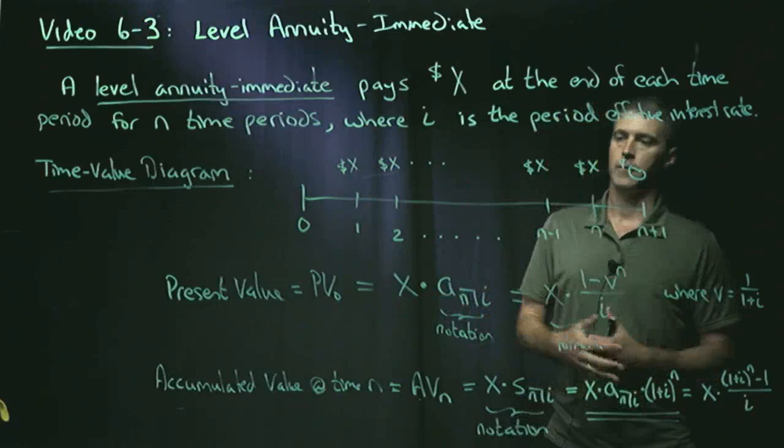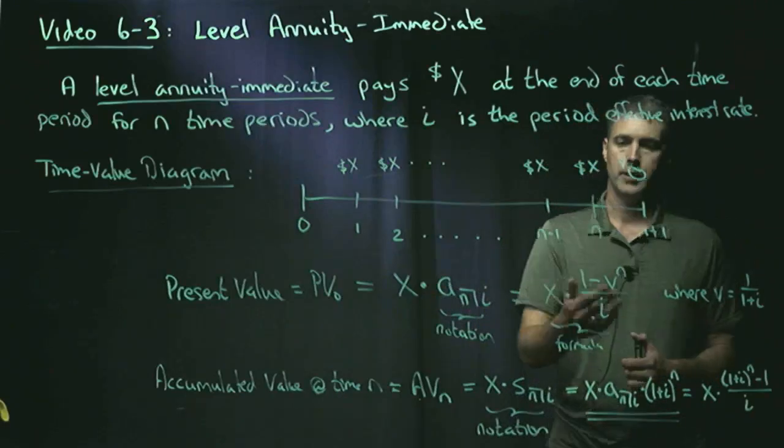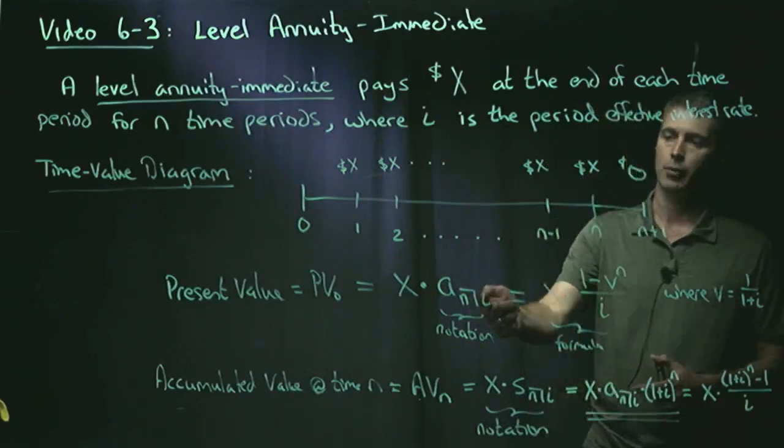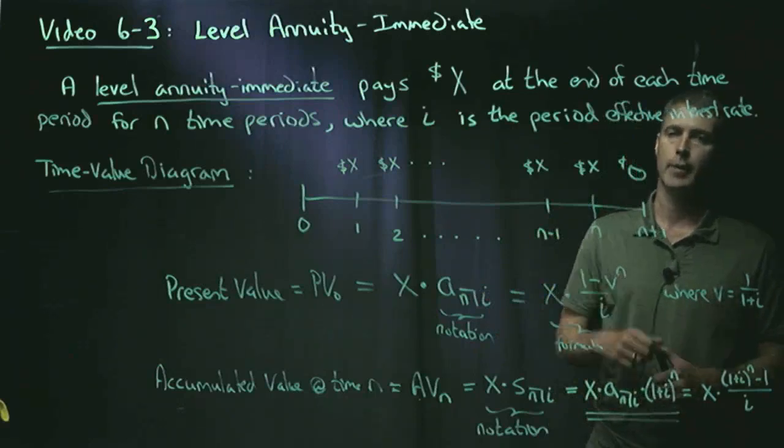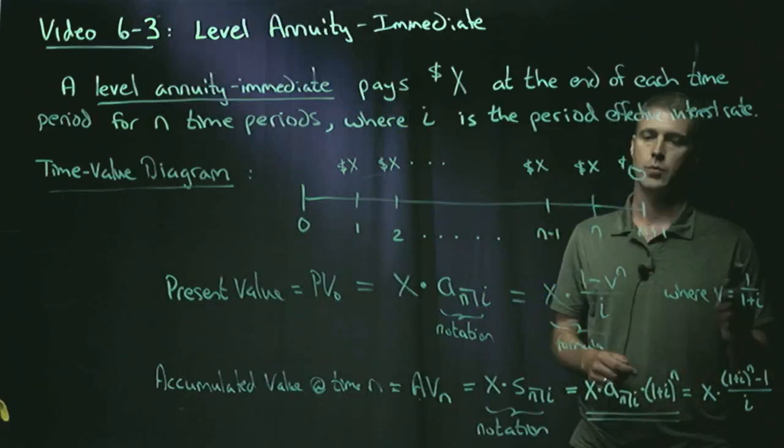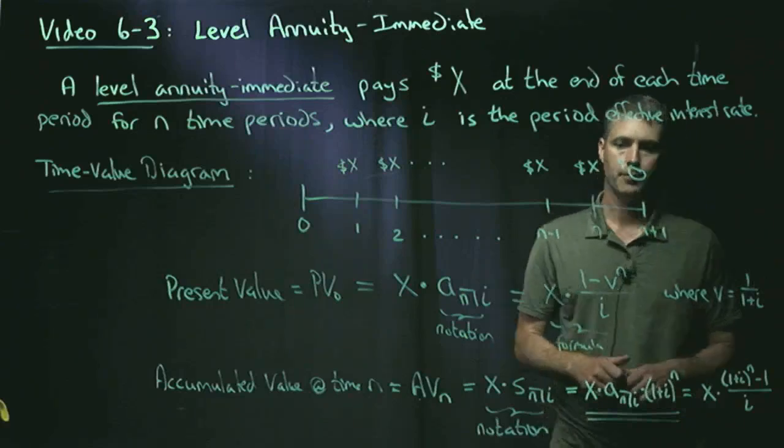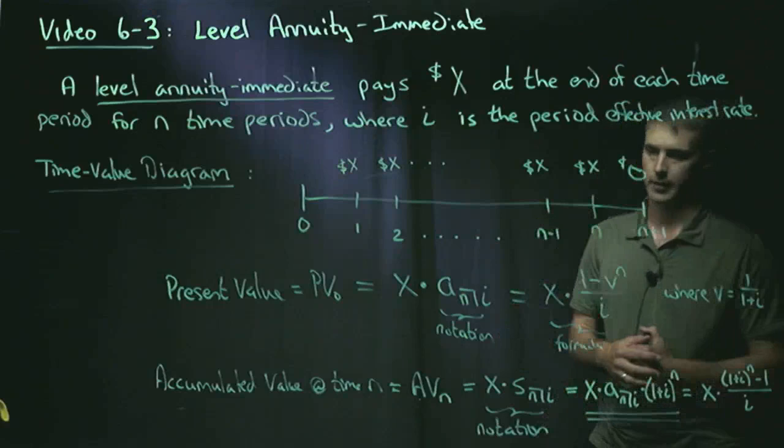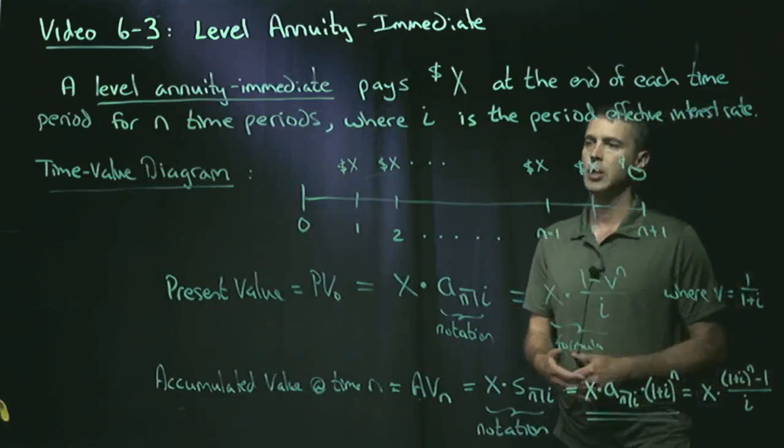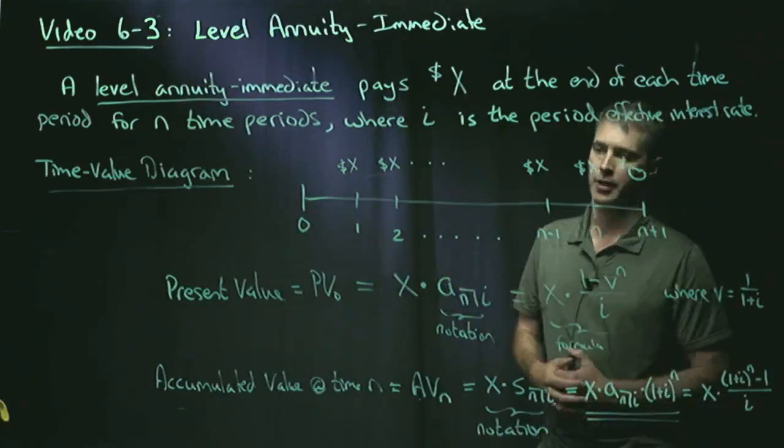The actual formula for calculating the present value is here. The A angle N at I is equal to 1 minus V to the N divided by I, where V is 1 over 1 plus I. And we will derive this formula in class, most likely. So we now have a way of computing the present value.